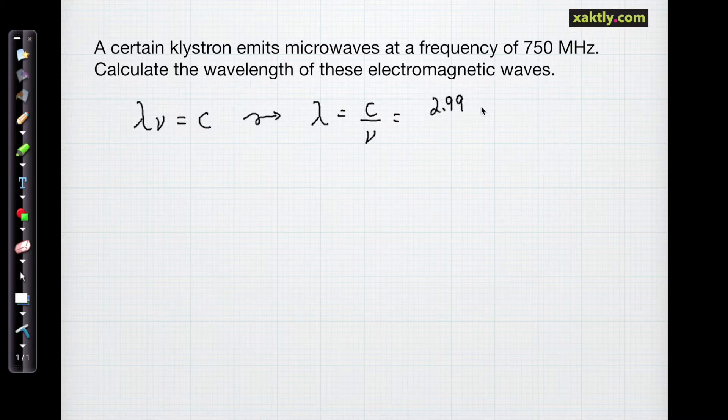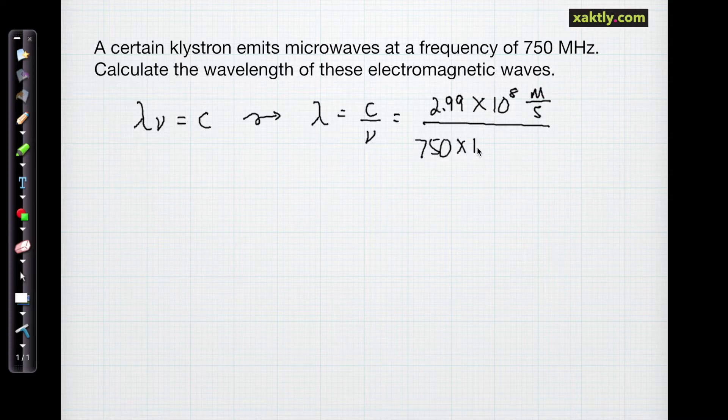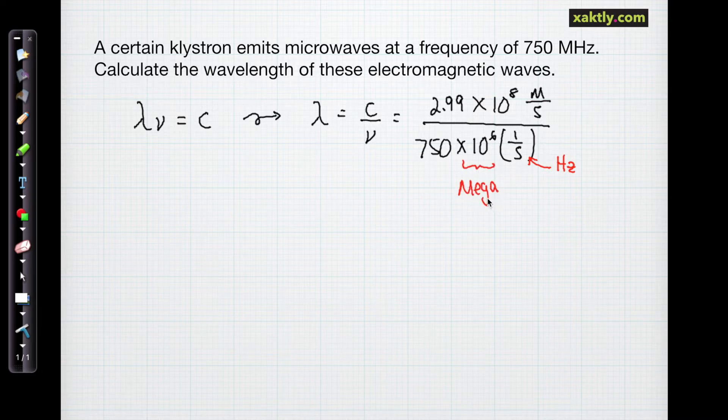And then we'll just plug in our numbers: 2.99 times 10 to the eighth meters per second. And then divide that by the frequency. It's in megahertz so that's going to be 750 times 10 to the sixth hertz or 10 to the sixth times 1 over seconds. We can cancel out the 1 over seconds. Remember 10 to the sixth, mega means 10 to the sixth. So cancel out those 1 over seconds. We're left with units of meters which is a unit of wavelength.